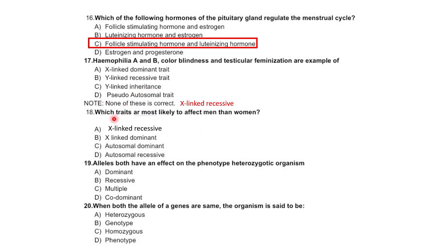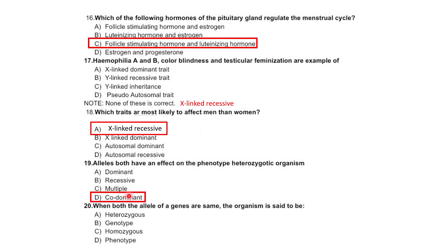Which traits are most likely to affect men more than women? X-linked recessive, X-linked dominant, autosomal dominant, or autosomal recessive? Autosomal dominant and recessive rates differ: the recessive is more effective in men, so the correct option is X-linked recessive. For alleles, both having an effect on the phenotype in a heterozygotic organism — dominant, recessive, multiple, or co-dominant — the correct option is co-dominant.